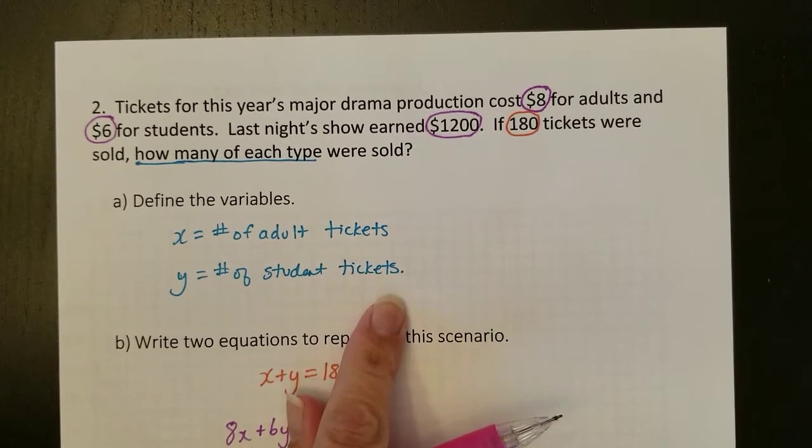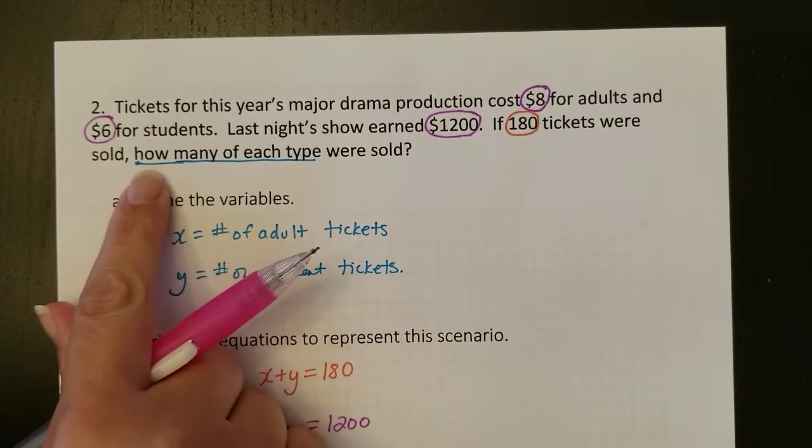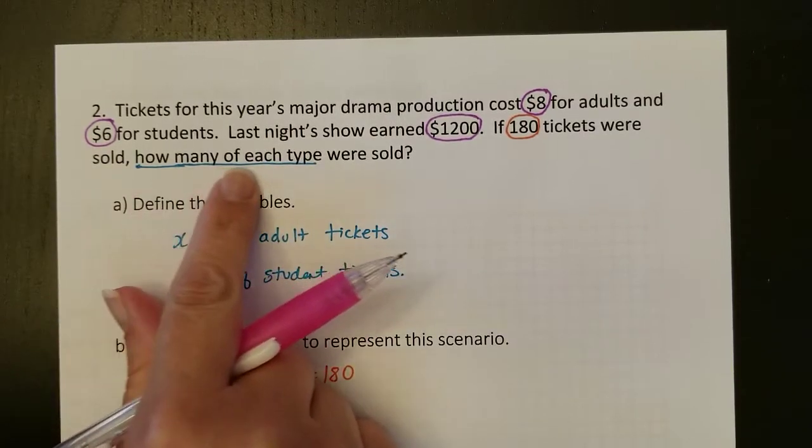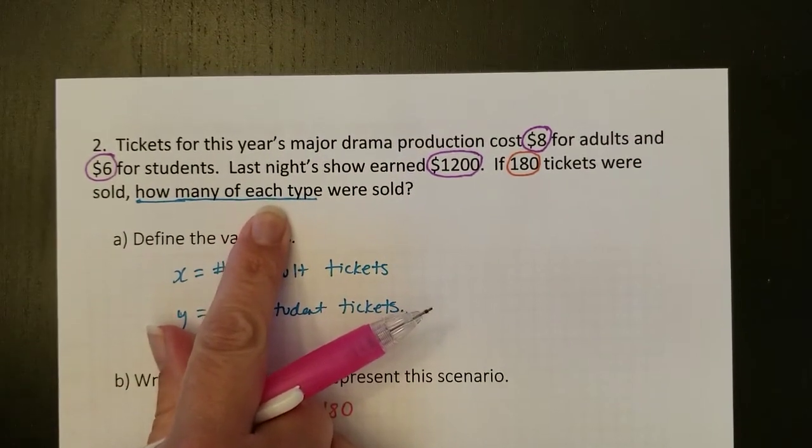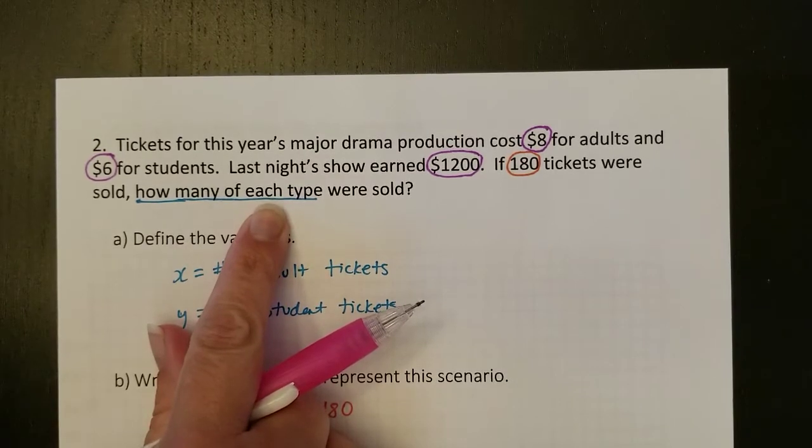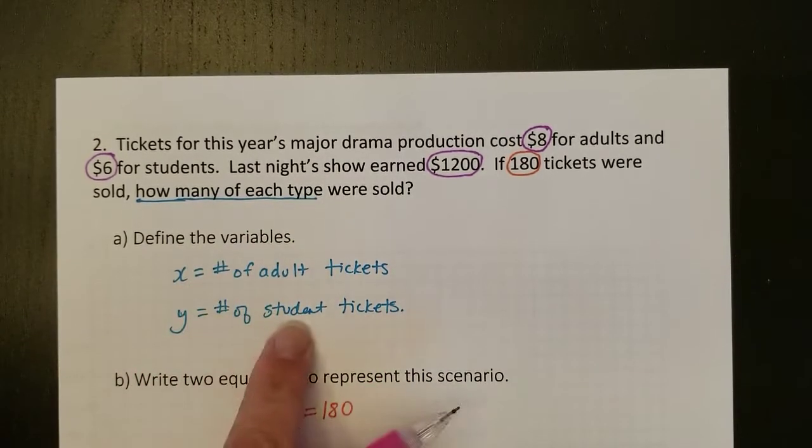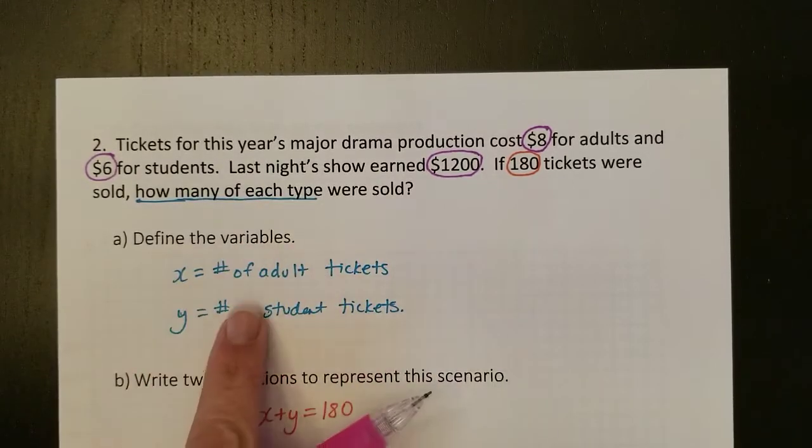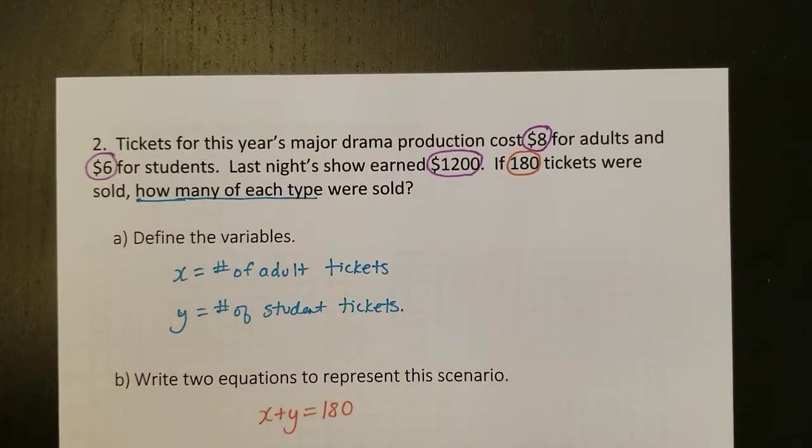I always know what my variables will be because they are going to answer the question that's being asked. If it says how many of each type of tickets, then your variables need to be the number of different tickets of each type. So when you find your variables, you've answered the question that's being asked.